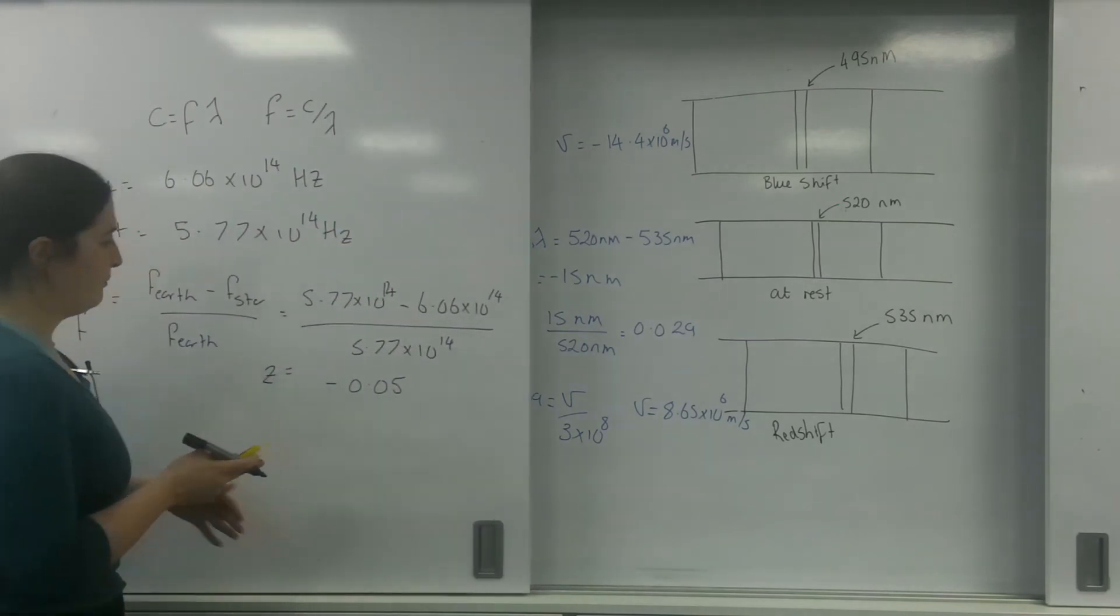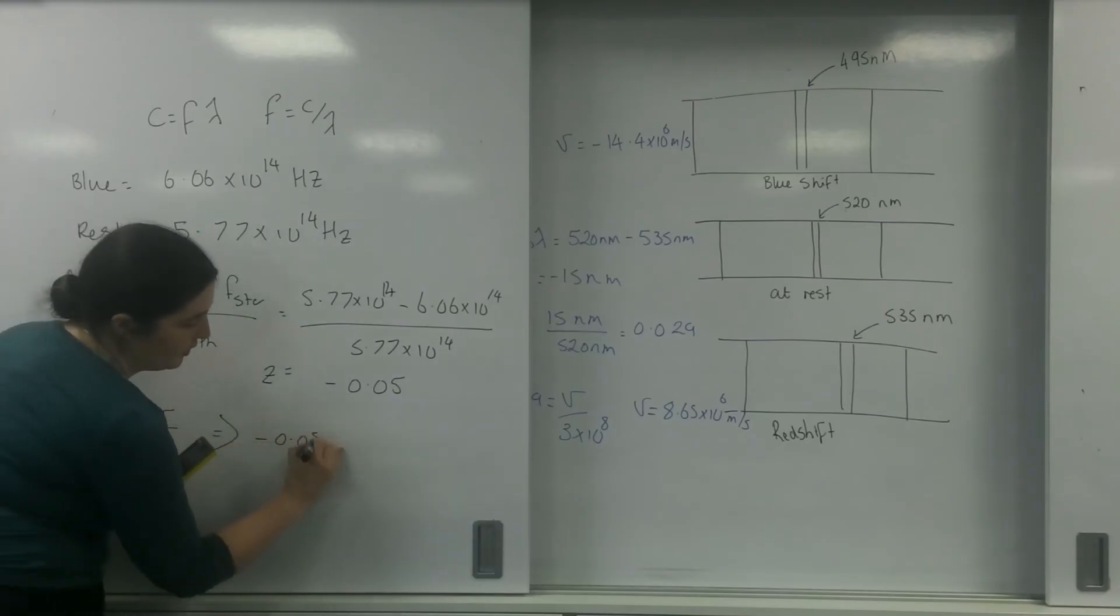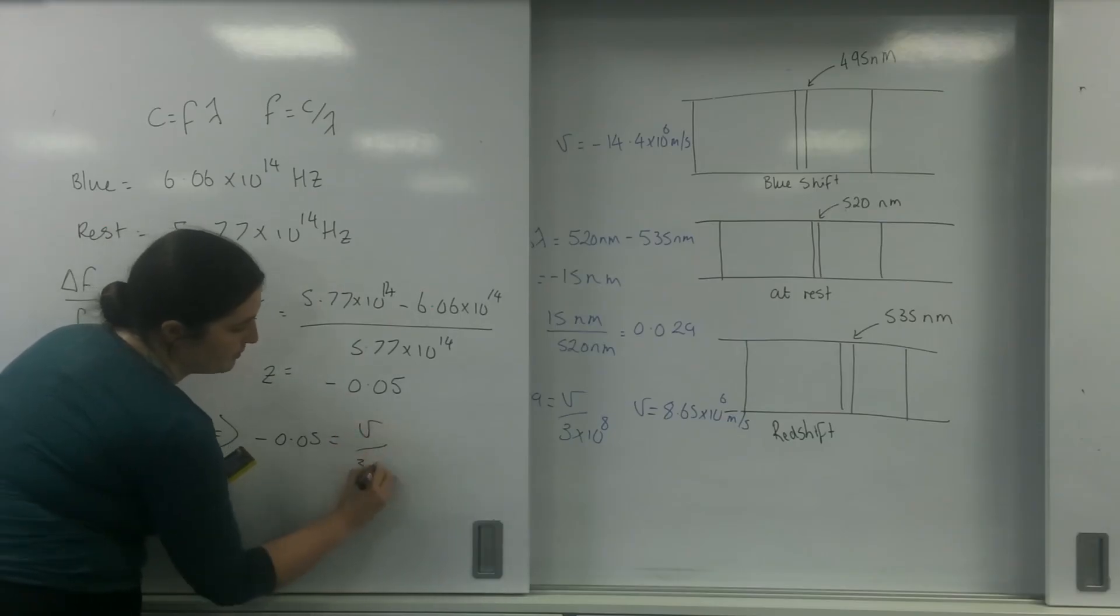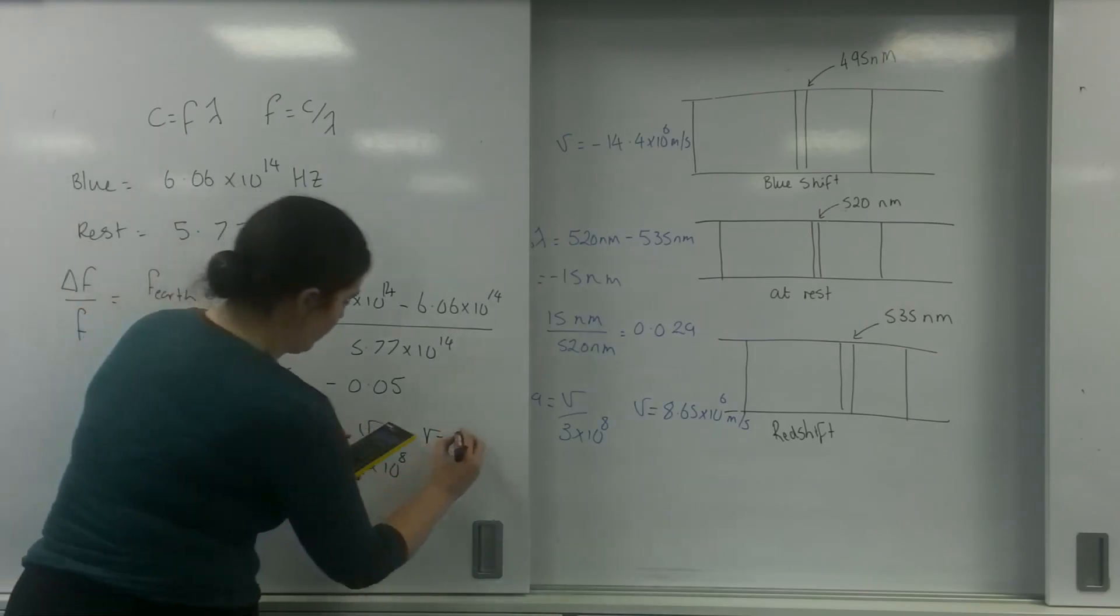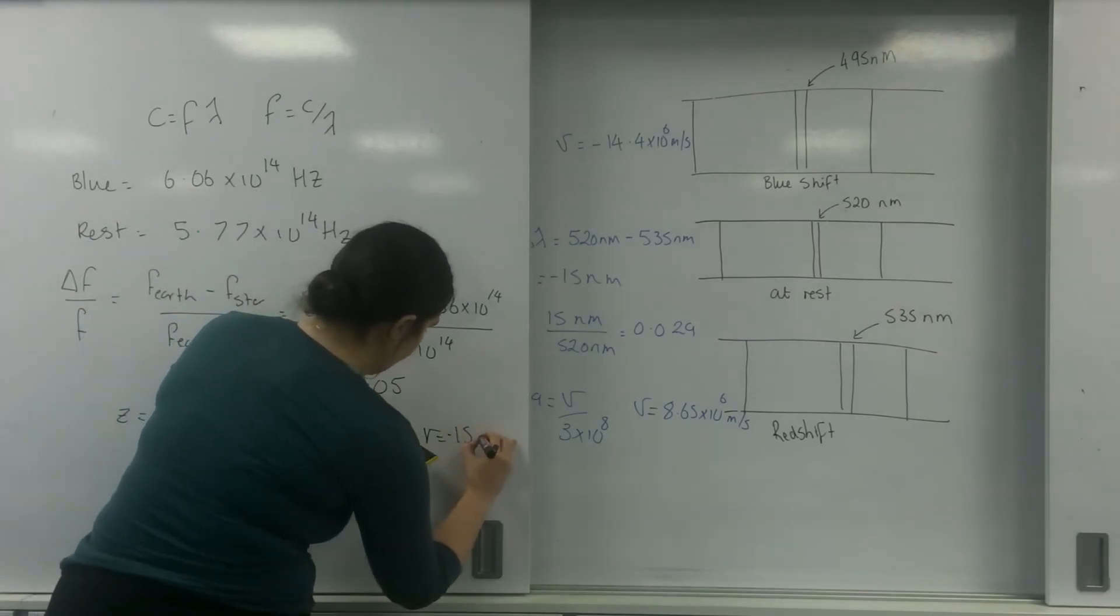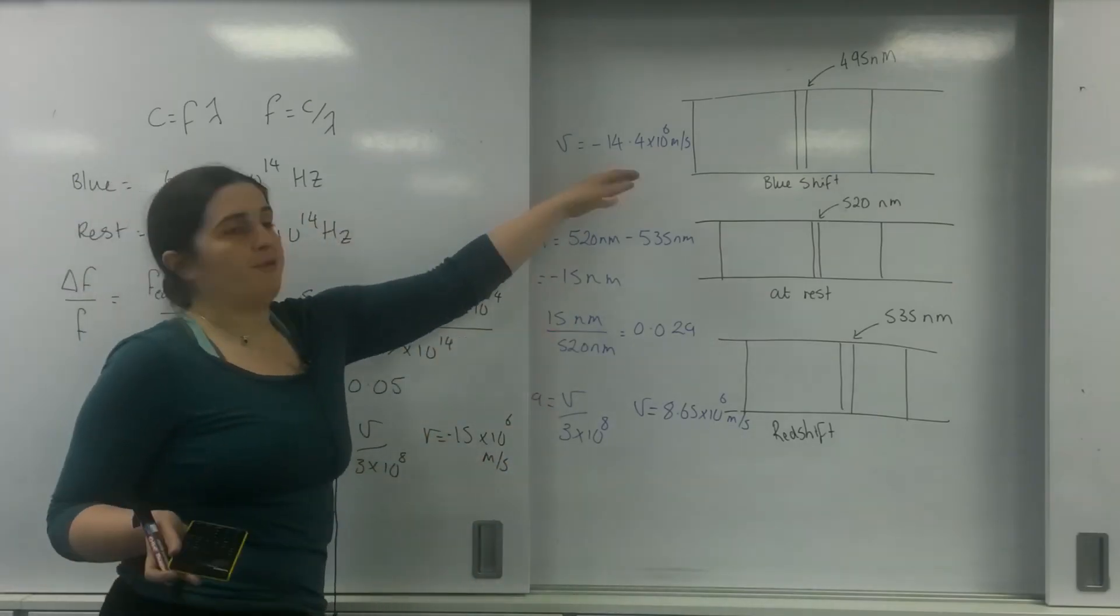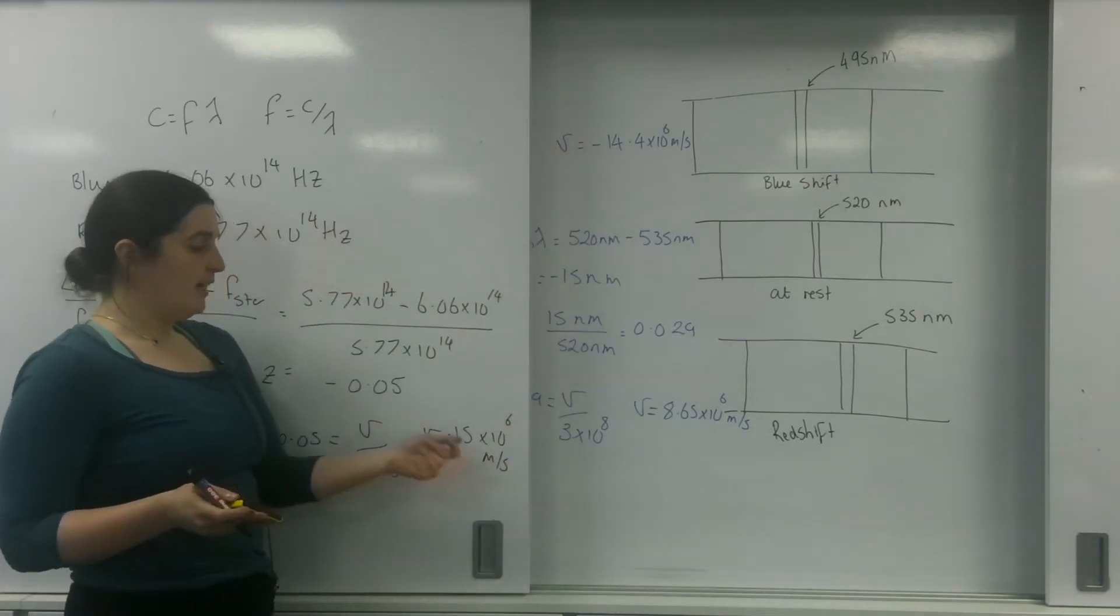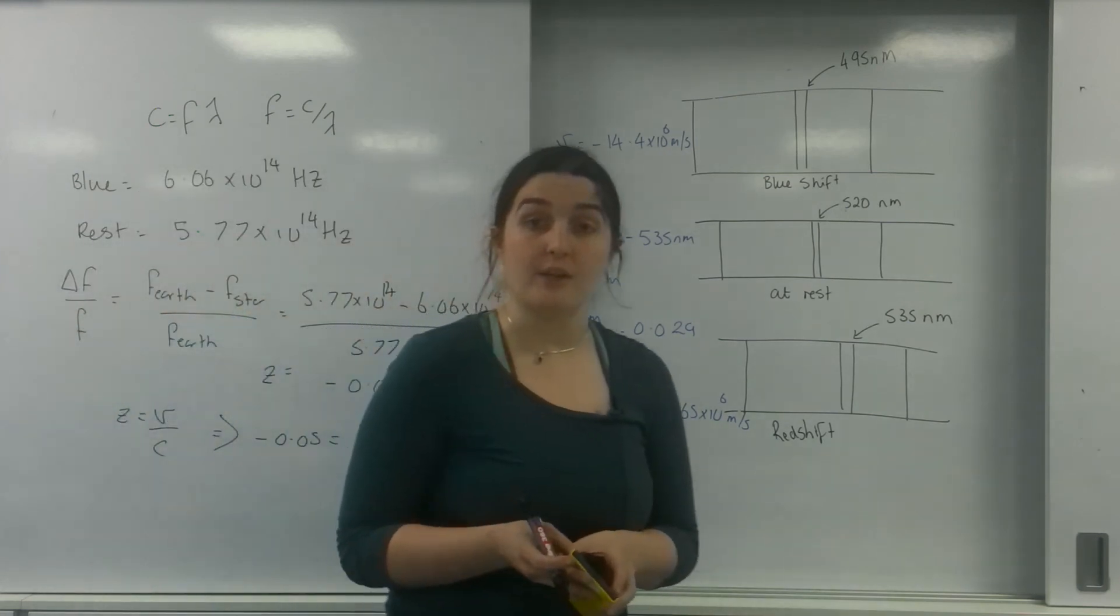I know that Z is velocity over C, so that is going to be minus 0.05 equals V over 3 times 10 to the 8. So the velocity equals minus 15 times 10 to the 6 meters per second. Which given the 14.4, a little bit of rounding along the way, minus 15 times 10 to the 6 meters per second, that being minus 14.4, not the end of the world.